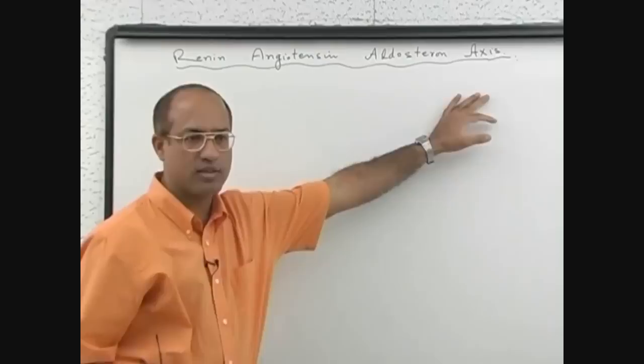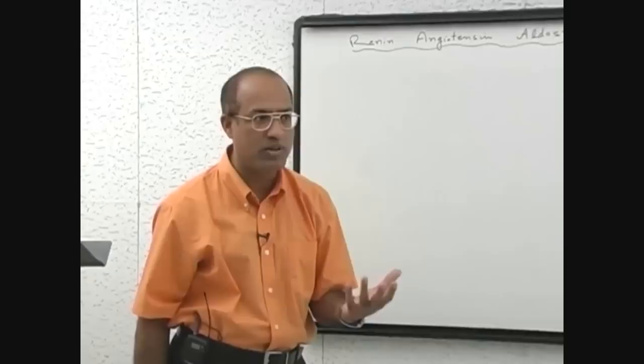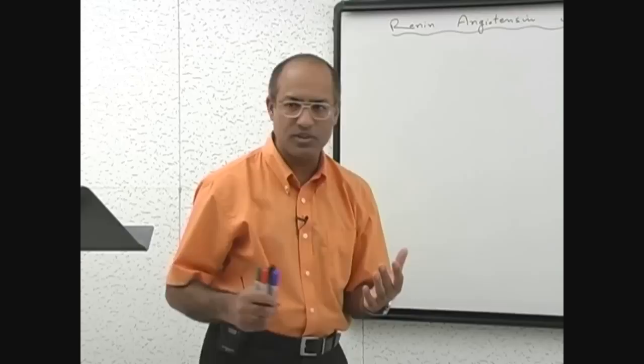Today we are going to talk about the renin-angiotensin-aldosterone axis or the system. It is one of the very important physiological systems which is doing lot of function. But the most important function is blood pressure regulation - how the system regulates your blood pressure. So let's start first to understand its physiology.